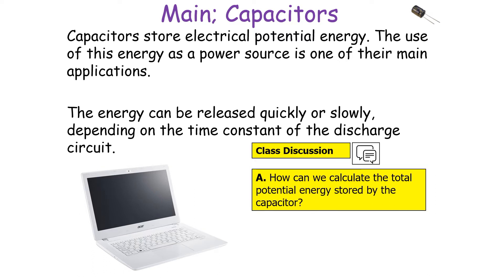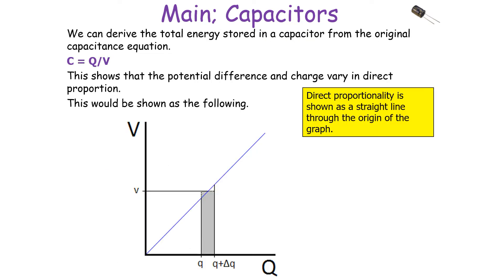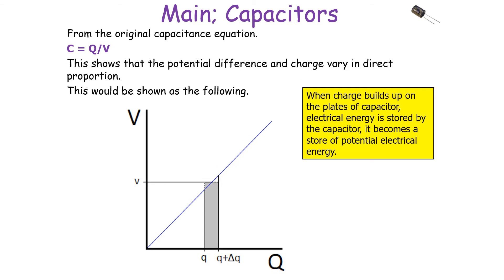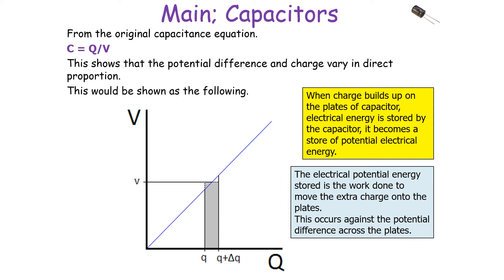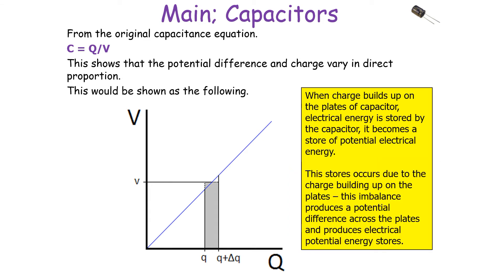We can derive the total energy stored in a capacitor from the original capacitance equation C equals Q over V, because this indicates that potential difference and charge vary in direct proportion — shown as a straight line graph through the origin. When charge builds up on the plates, electrical potential energy is stored. This stored energy is the work done to move the extra charge onto the plates, overcoming the repulsion of placing like charges there. This occurs against the potential difference across the plates, and the imbalance produces the electrical potential energy store.